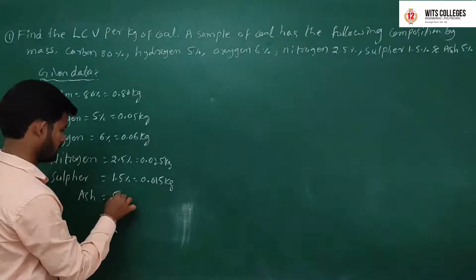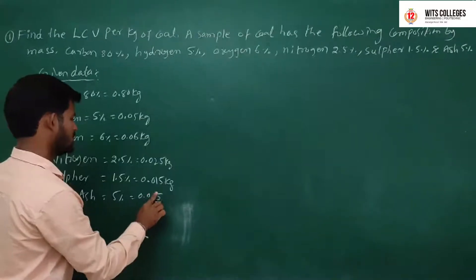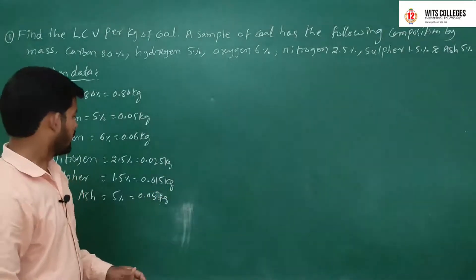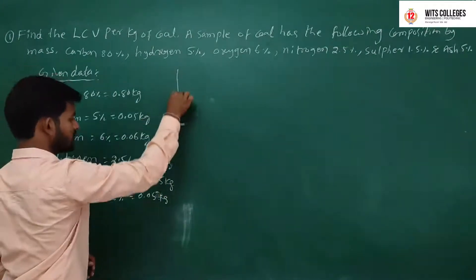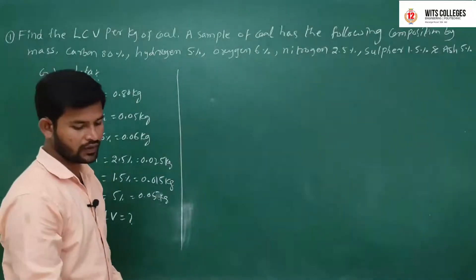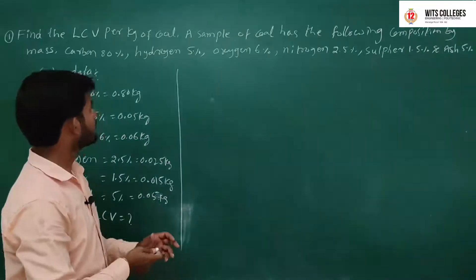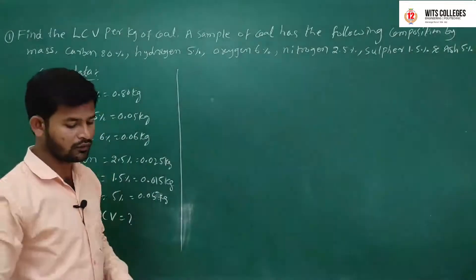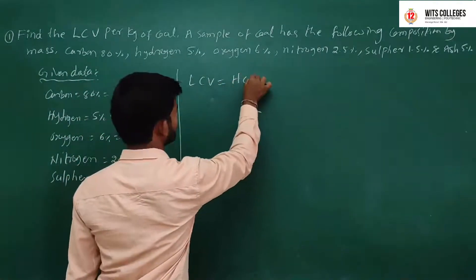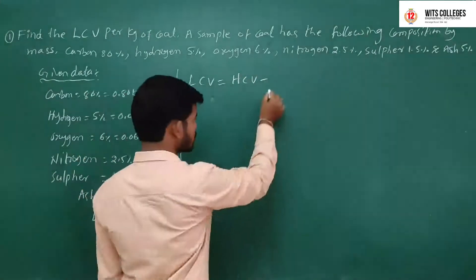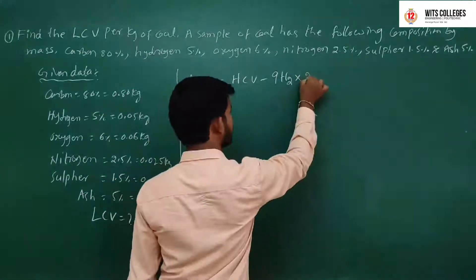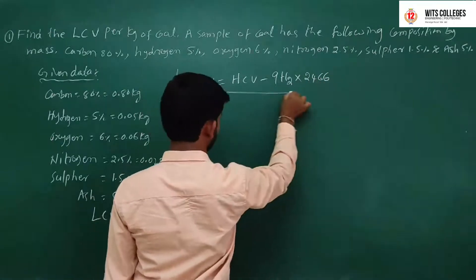Ash = 5% = 0.05 kg. We will find out the lower calorific value. The formula for LCV is: LCV = HCV − 9H₂ × 2466. First we find out the higher calorific value using the Dulong's formula.